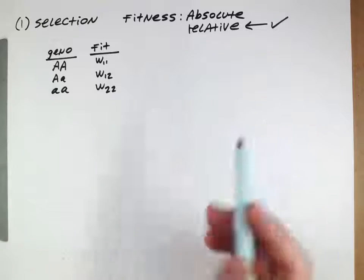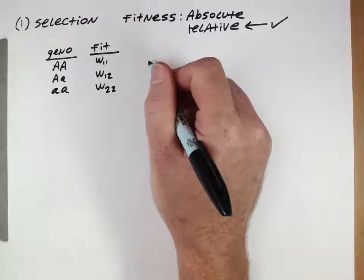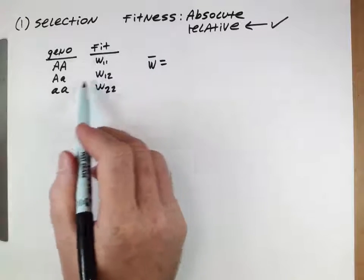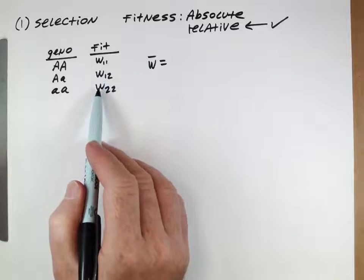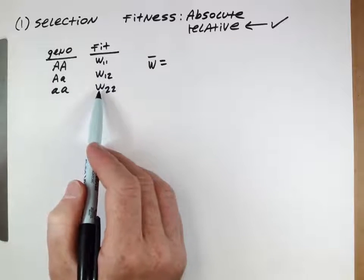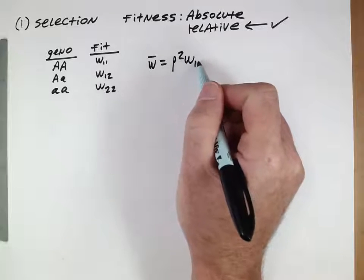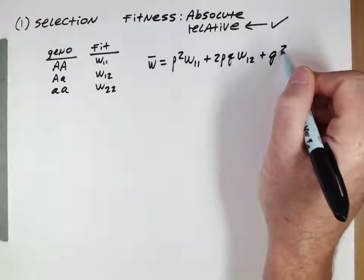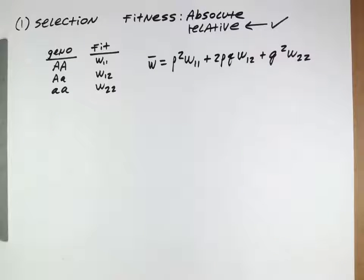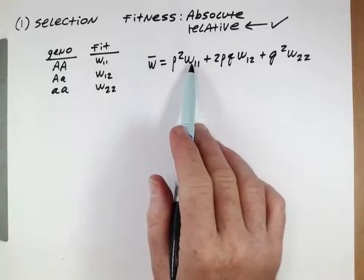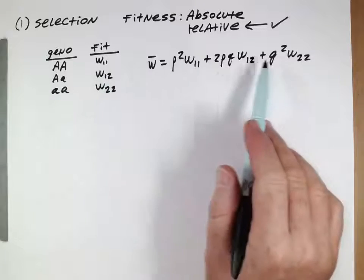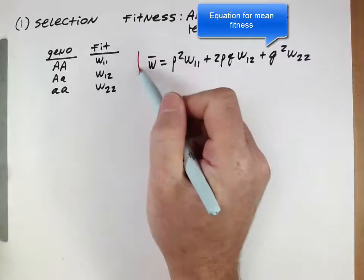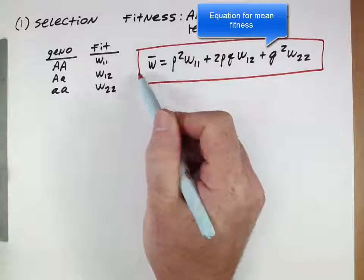For relative fitness, we want to calculate the mean fitness in a population. The mean fitness is the weighted average of each genotype's fitness — it's based on the frequency of individuals with each genotype multiplied by their respective fitness values. So mean fitness W-bar equals the frequency of each genotype times its fitness, summed across all three genotypes.